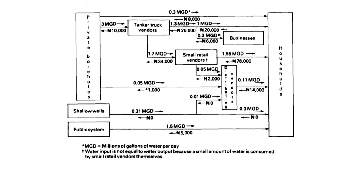If you look closely at the amounts of money and water moving along the pathways at the top of the figure, you can see that most of the population of Onitsha was being served by the water vending system. In the dry season, tanker trucks picked up about 3 million gallons per day at a couple of hundred private boreholes scattered throughout the city. They sold about 1 million gallons per day directly to households and about 0.3 million gallons per day to businesses.